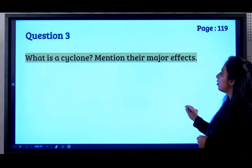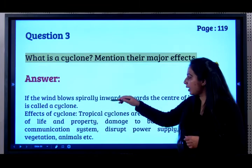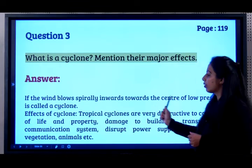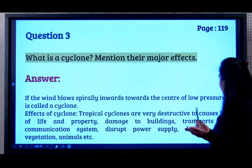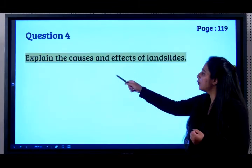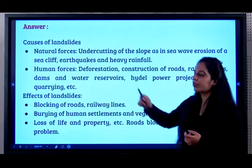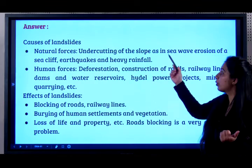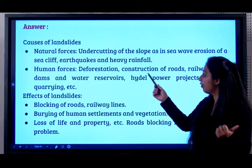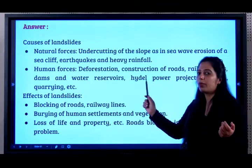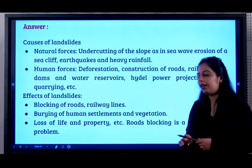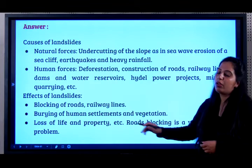What is a cyclone? If the wind blows spirally inwards towards the center of low pressure, it's called a cyclone. The effects are: they are very destructive and cause loss of life and property, damage to buildings, transport and communication systems, disruption of power supply, and destruction of crops, vegetation, and animals. Causes of landslides include natural causes — undercutting of slope, earthquakes, and heavy rainfall — and human causes such as deforestation, construction of roads, railway lines, dams, water reservoirs, hydel power projects, and mining. Effects of landslides include blocking of roads and railway lines, burying of human settlements and vegetation, and loss of life and property.